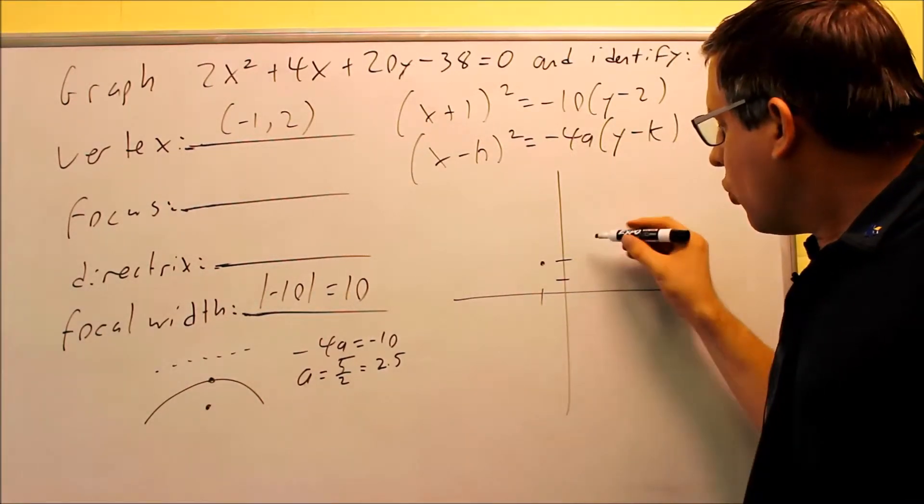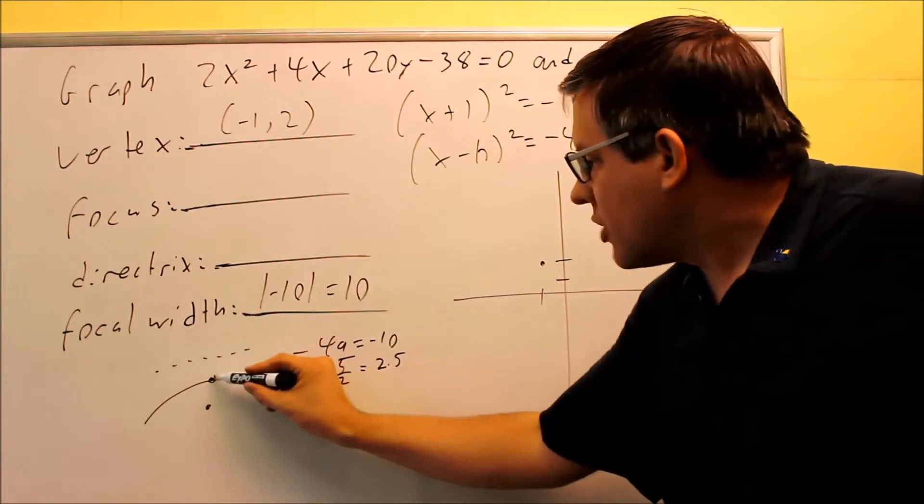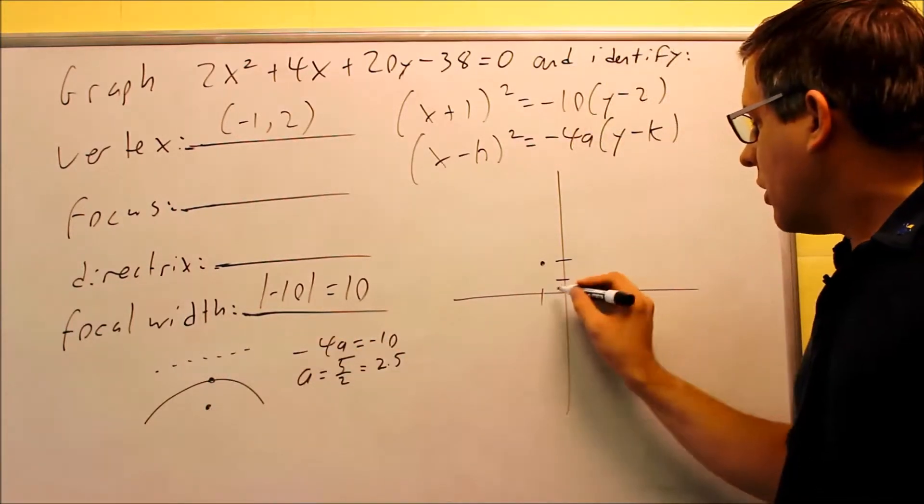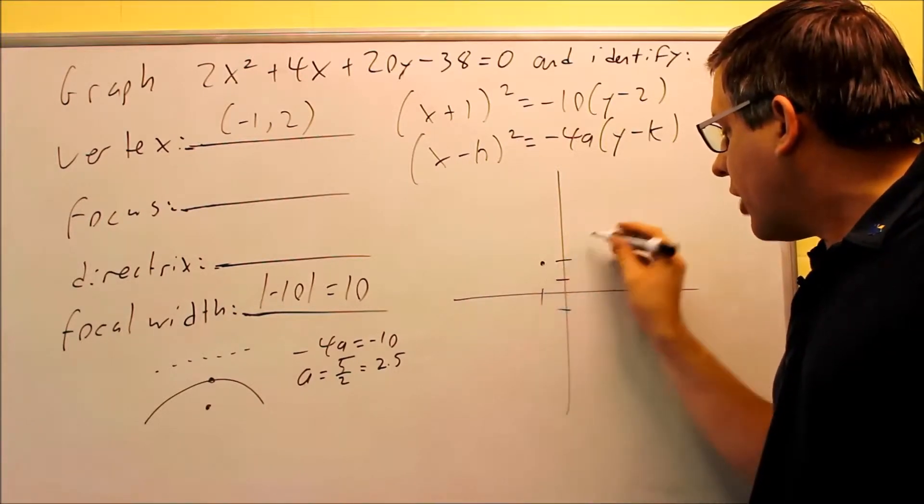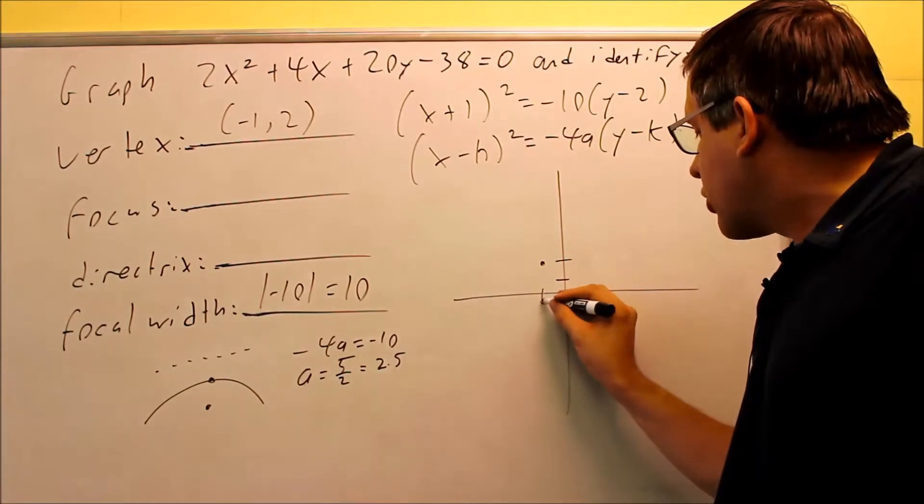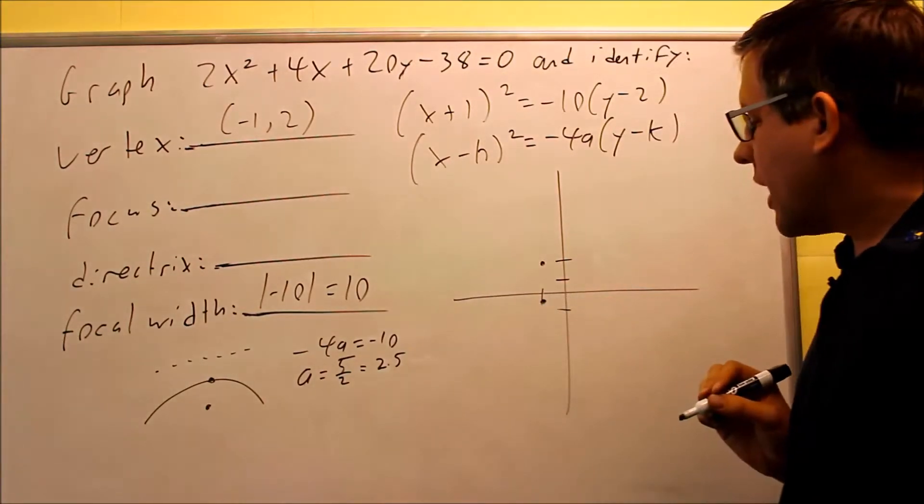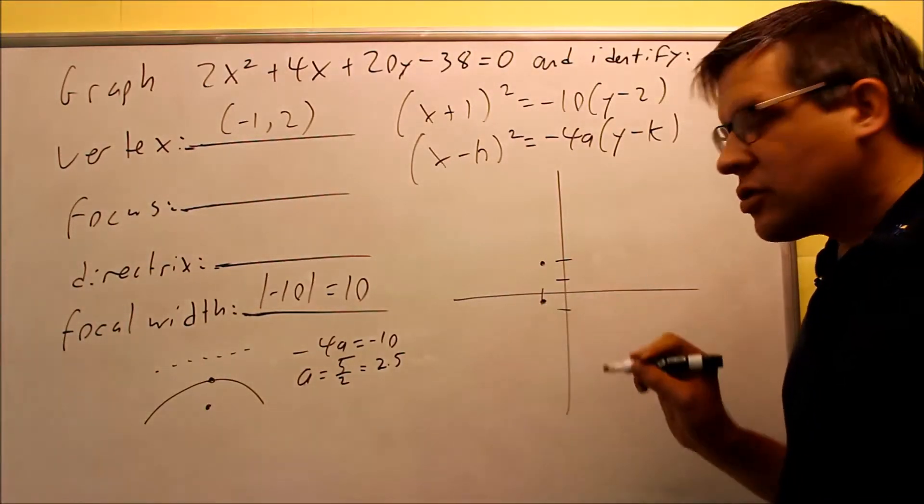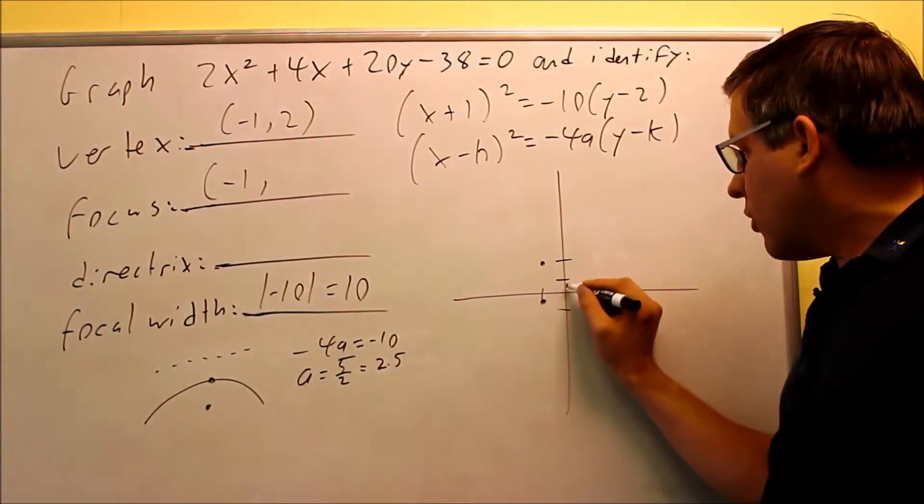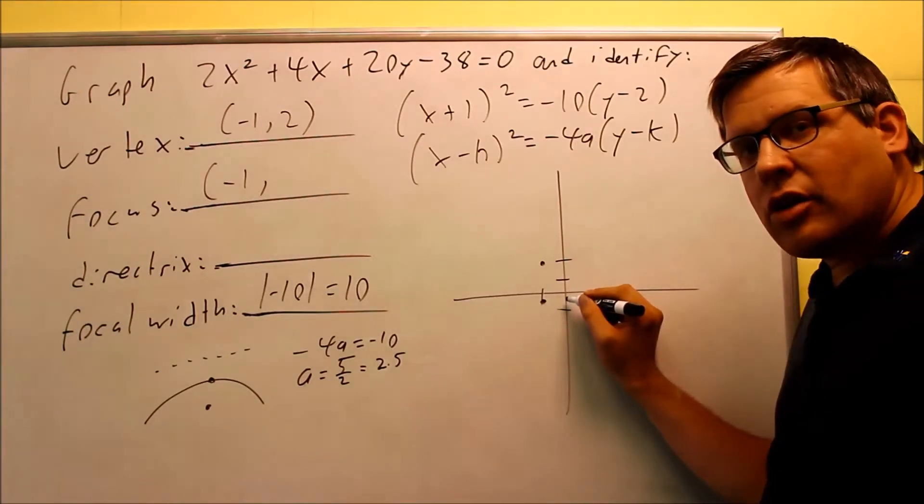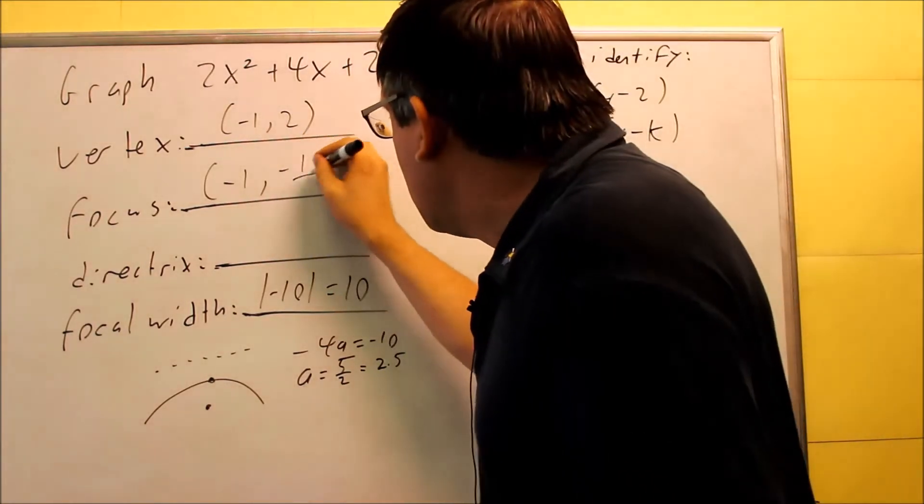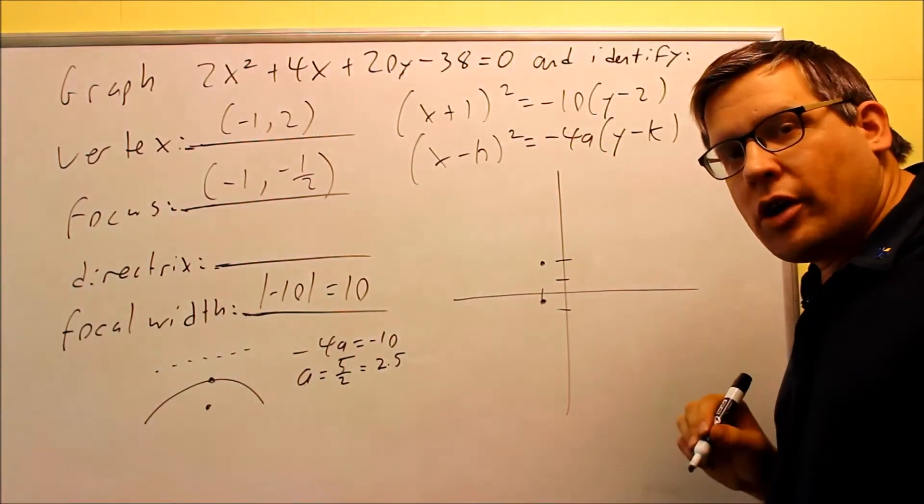And then the model says that we've got to go down to get our a value and up to get the directrix. From here if I go down 2.5, I'm going to go down 2 to here and then I get an extra 0.5 will be right there. So that's going to be my focus. Now if I want to write the coordinates for that, that would be negative 1. And then I go down 2 and an extra half, so I could either write that as negative 0.5, or write it as a fraction negative 1 half.